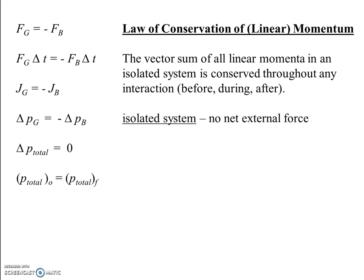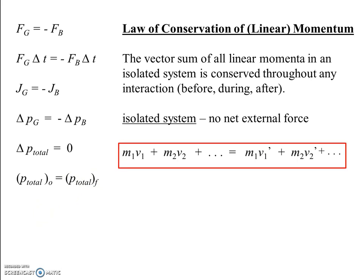An isolated system is defined as having no net external force. As long as there are only internal forces, we can apply conservation of linear momentum. If there's any external force, we can't use it. For the equation form: the total momentum you start with equals the total momentum you finish with. That's m1v1 plus m2v2 plus dot dot dot, equals m1v1-prime plus m2v2-prime plus dot dot dot, adding all momenta as vectors.